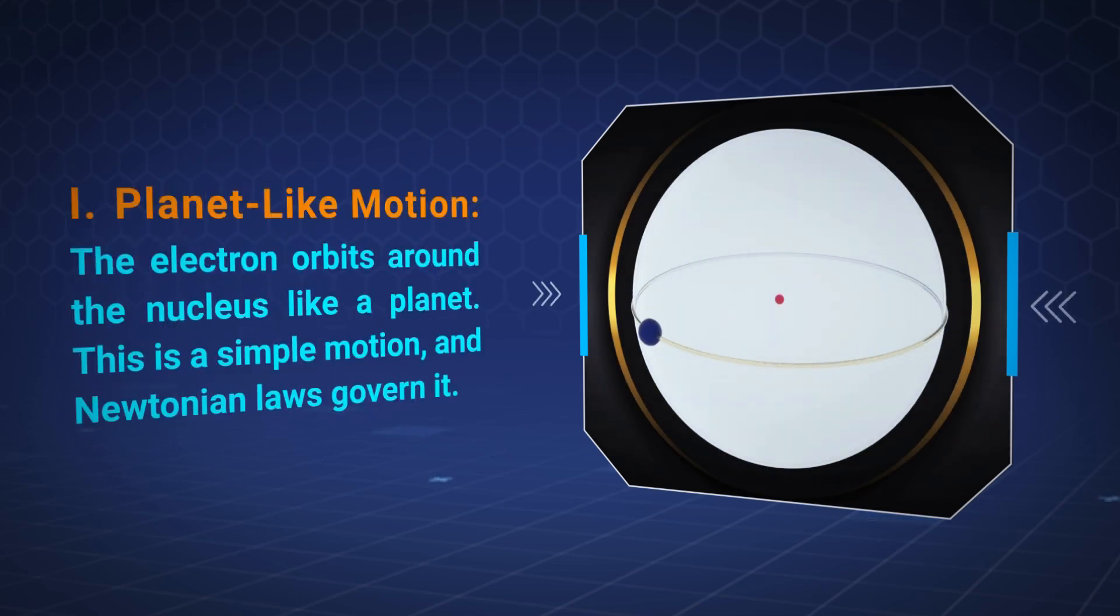Planet-like motion: The electron orbits around the nucleus like a planet. This is a simple motion and Newtonian laws govern it.